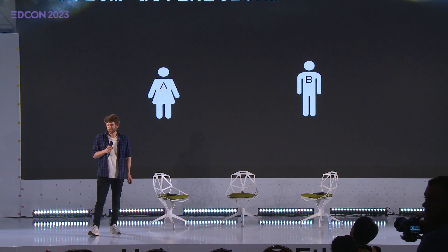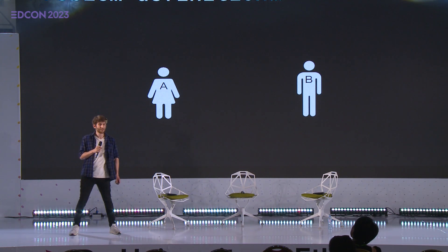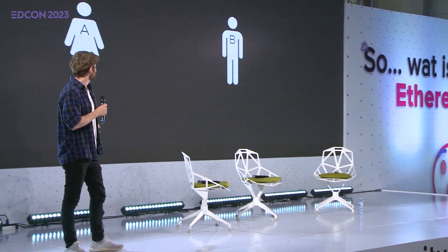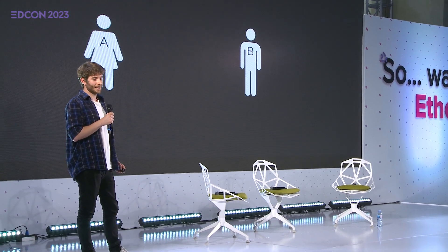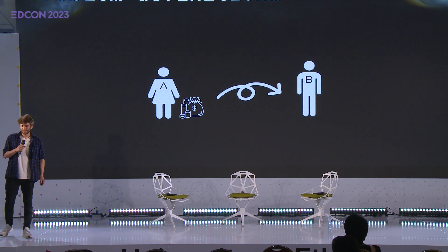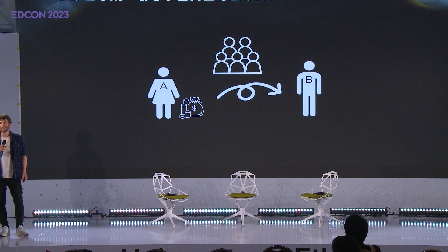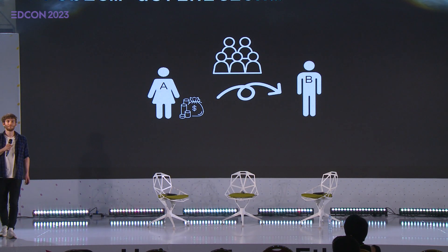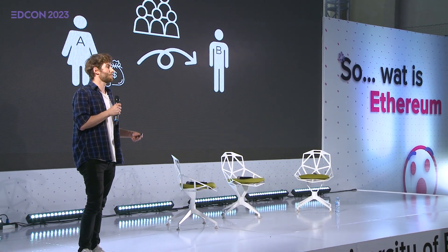So let's directly dive into the problem definition. As you can see on the slides, we have two entities, Alice and Bob, and Alice has some money that she wants to transfer to Bob. The problem here is there is a large crowd looking at them, because the blockchain is publicly accessible and transparent. Alice cares a lot about privacy and she wants to avoid that people can create a link between them.